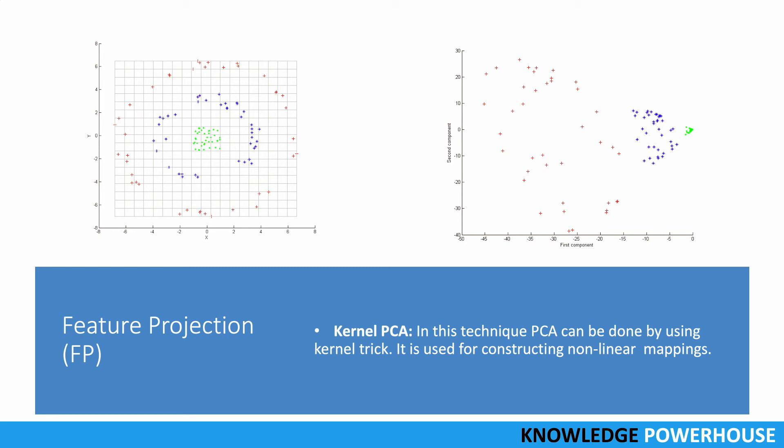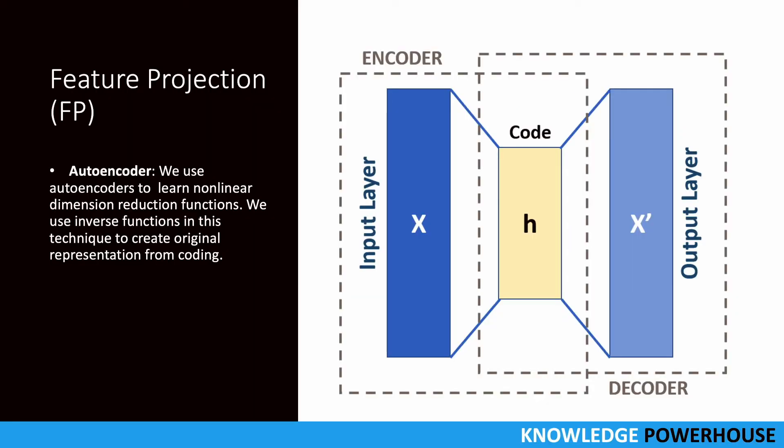Last but not the least, we have autoencoder. Here we can use autoencoders with some kind of encoding functions so that we can learn nonlinear dimension reduction functions. It uses inverse functions so that we can create original representation from the coding. We use some functions to encode it, and then when we have to bring back the original representation, we use the inverse function. Both of these things have to be developed at the same time: encoder and decoder. These are the main techniques of feature projection which is mainly used for dimensionality reduction.